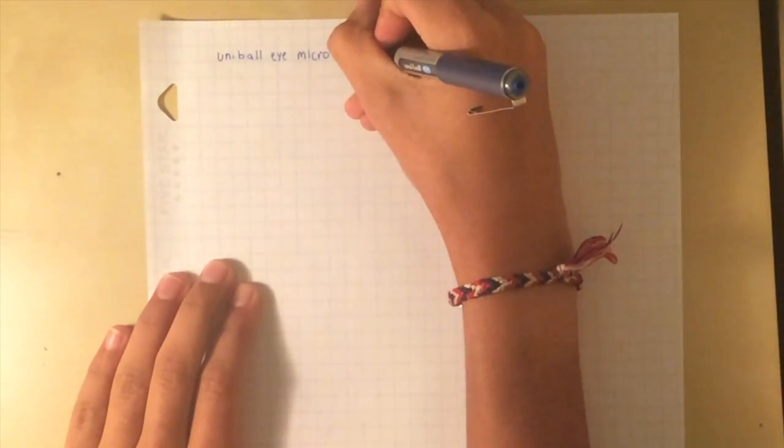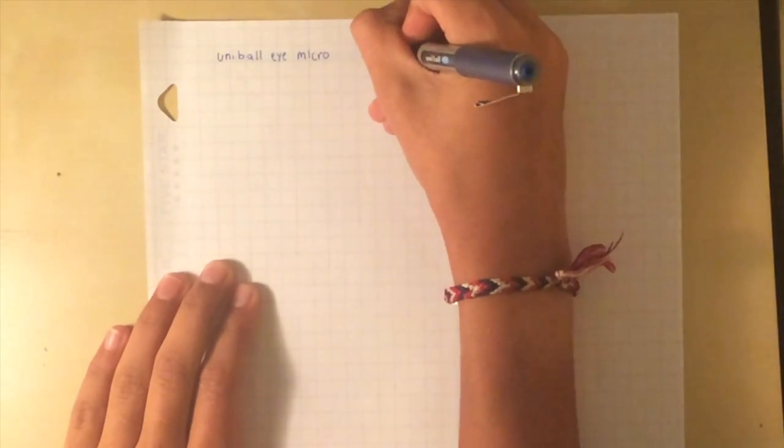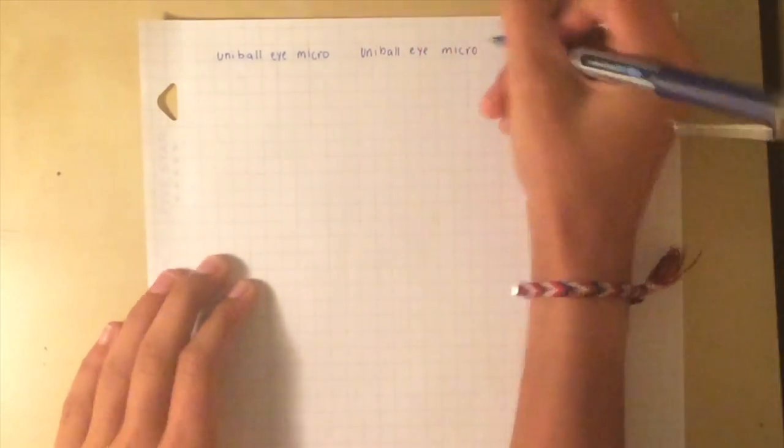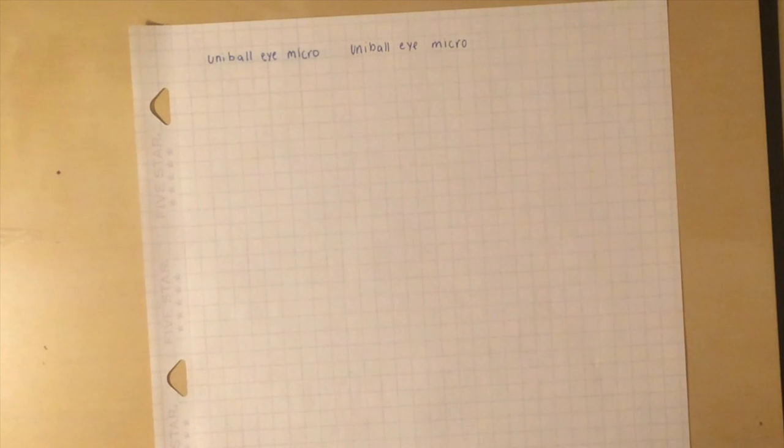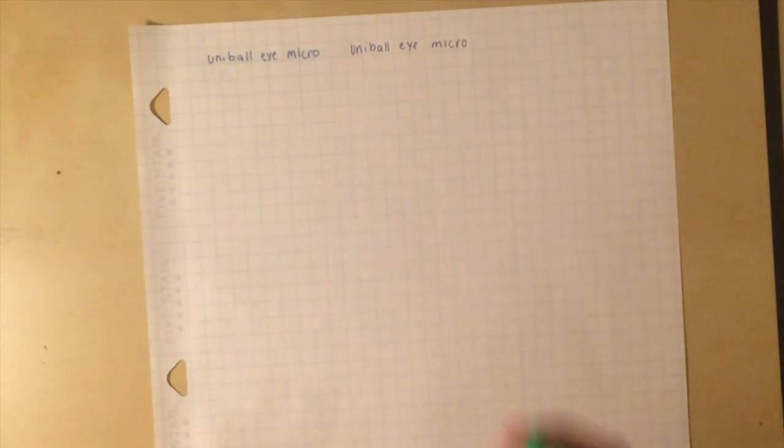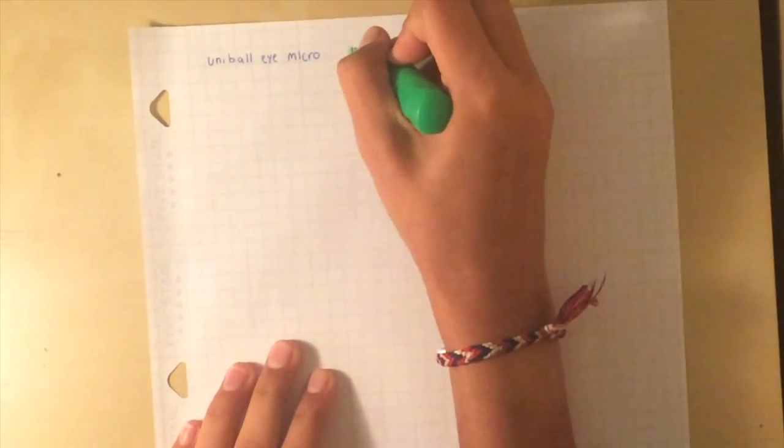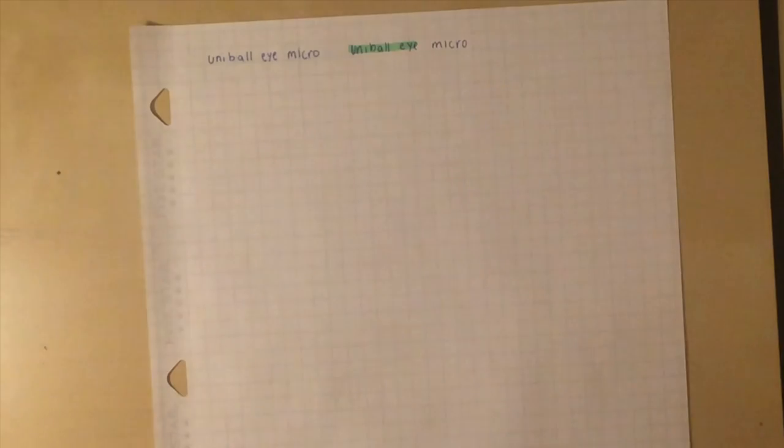Next we're going to do a highlighter test. Let's write the name again to see if it smears with the highlighter. We're going to try a light color, green, and then a dark color, purple. The highlighters I'm using are the UB Mini Highlighters.